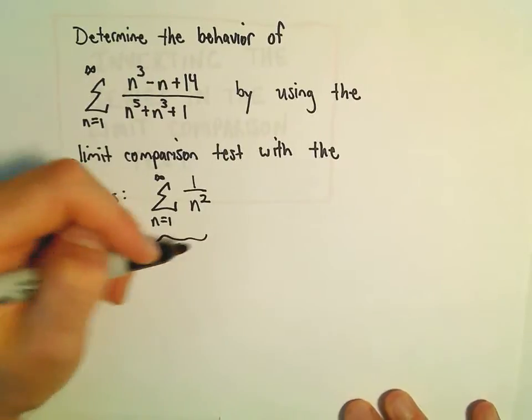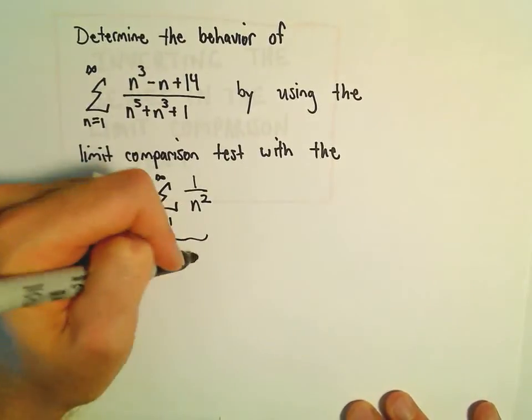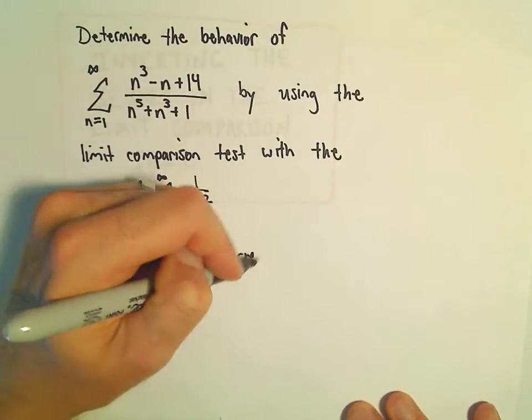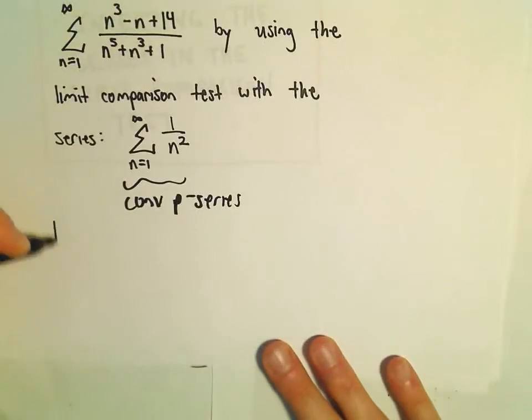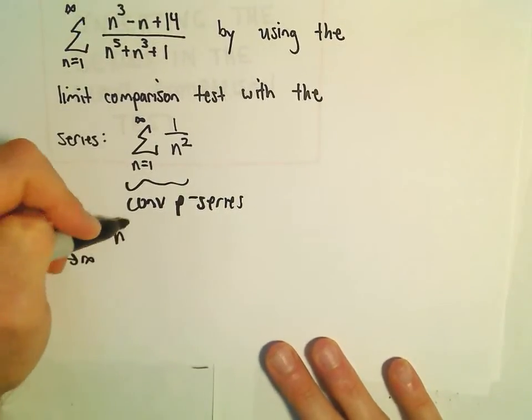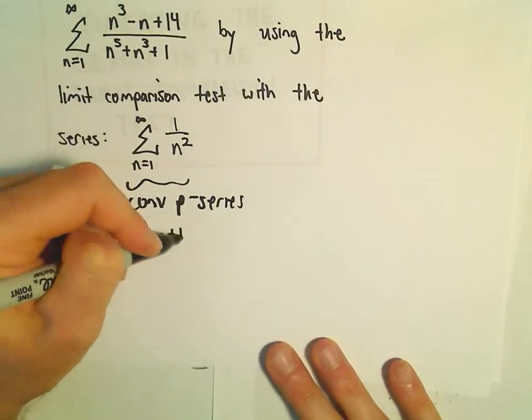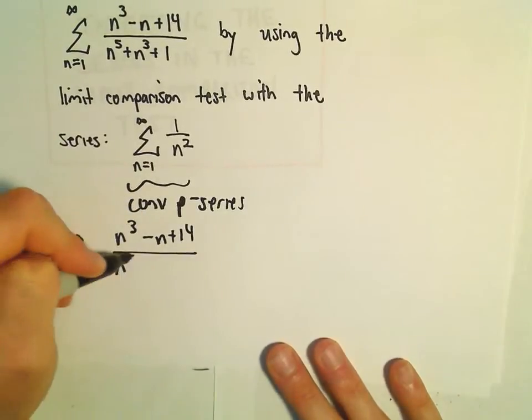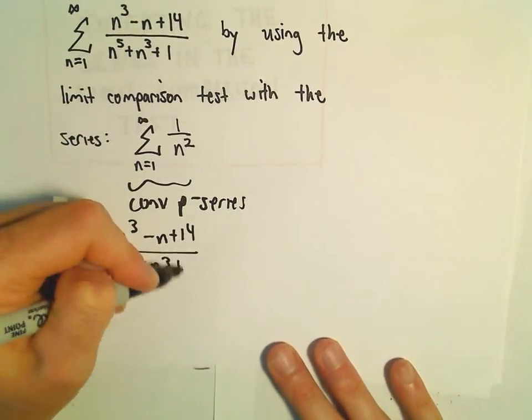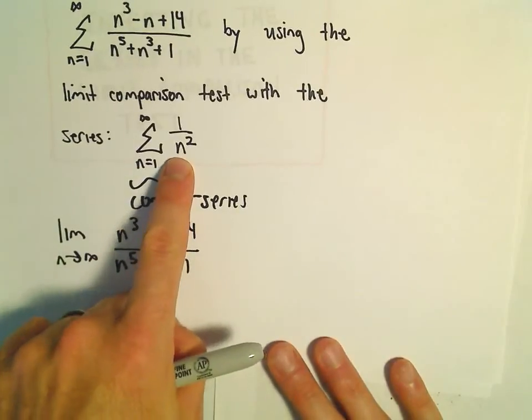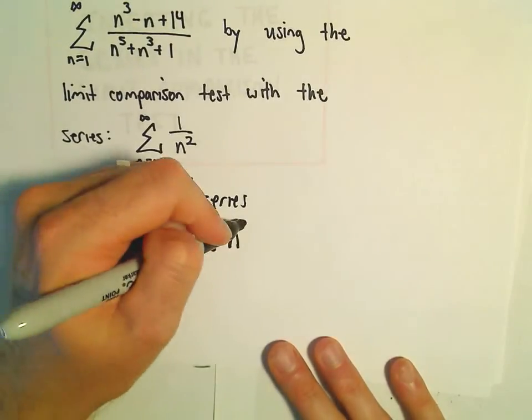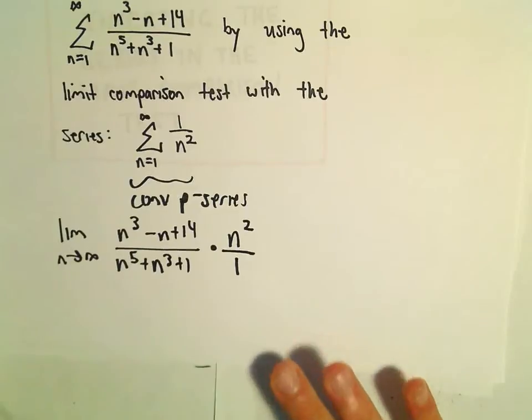And we know that this is just a convergent p-series. So if we do the limit as n goes to infinity, we've got n cubed minus n plus 14 over n to the 5th plus n cubed plus 1. We would divide by 1 over n squared, or equivalently multiply by n squared over 1.